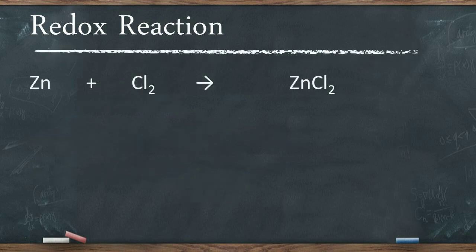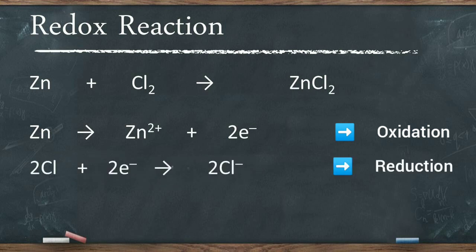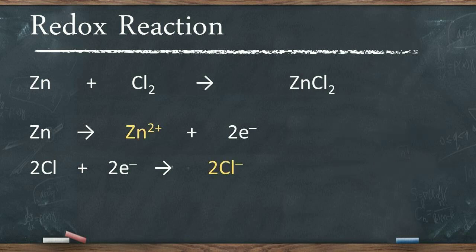Zinc reacts with chlorine to form zinc chloride. During this reaction, zinc loses two electrons to form zinc ion, which represents oxidation. The electrons lost by zinc are gained by chlorine to form chloride ions, which means chlorine is reduced. Due to opposite charges on zinc ion and chloride ions, they attract each other to form the ionic compound zinc chloride. As both oxidation and reduction occur simultaneously in this reaction, it is a redox reaction.